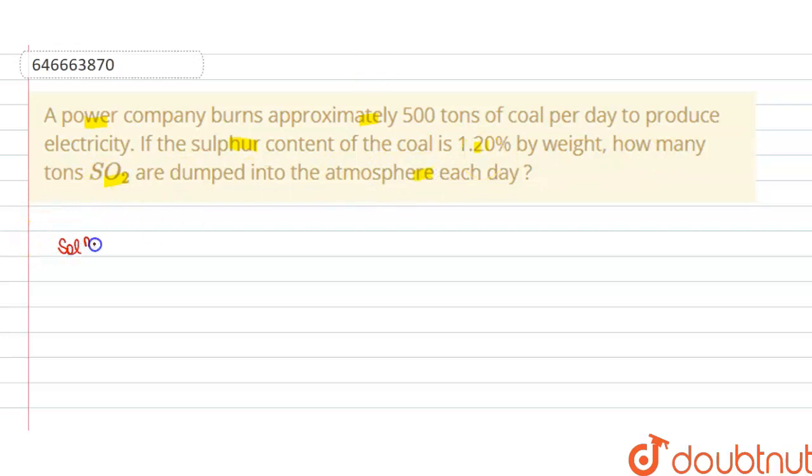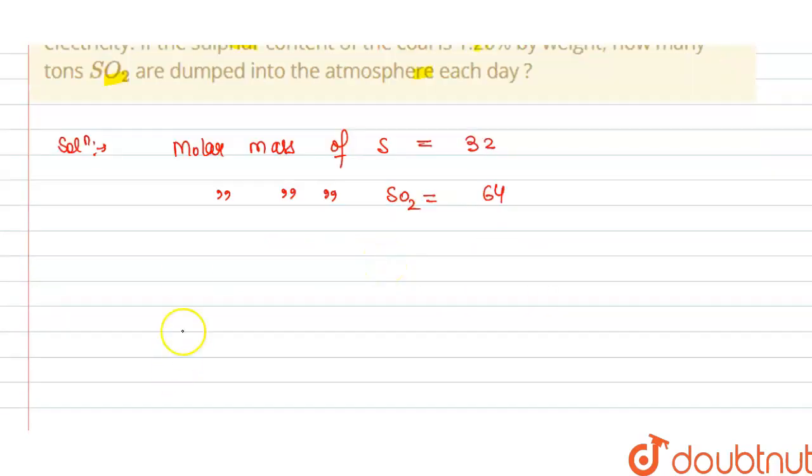We have the molar mass of sulfur is 32, and molar mass of SO2 is 64. And we have the number of: